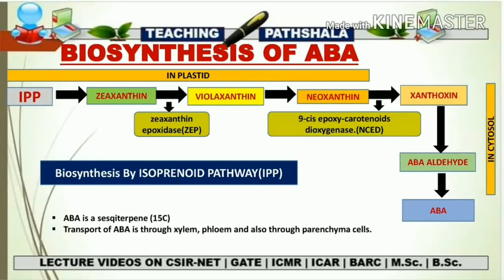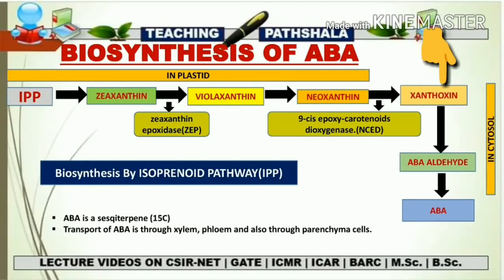Neoxanthin, with the help of an enzyme called NCED — 9-cis-epoxycarotenoid dioxygenase — is converted into xanthoxin in the cytosol. Xanthoxin is a 15-carbon compound. In the cytosol, xanthoxin is converted into ABA aldehyde, and finally ABA aldehyde is converted into abscisic acid. Xanthoxin, ABA aldehyde, and the final product abscisic acid are all 15-carbon compounds.